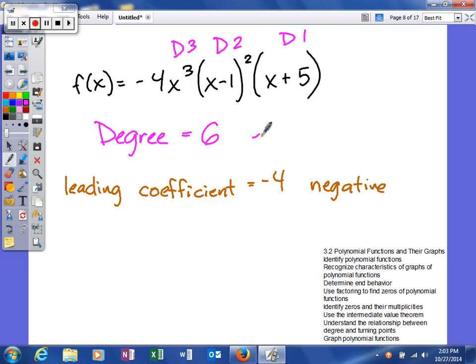And of course that is even. So since we have an even degree and a negative leading coefficient, the left side or left end will fall.